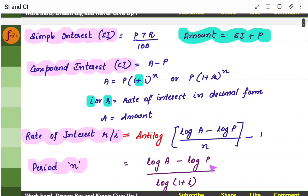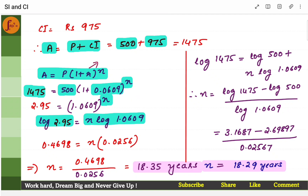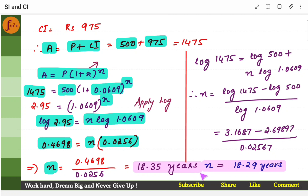Apply log on both sides — logarithm is used to remove the power. For this chapter, you should be clear on logarithm concepts and theory of indices. When I apply log on both sides, this will become log 2.95, and N comes here as N log of this entire thing. I find log of this separately, then divide and I'll get N. N is 18.29 years.